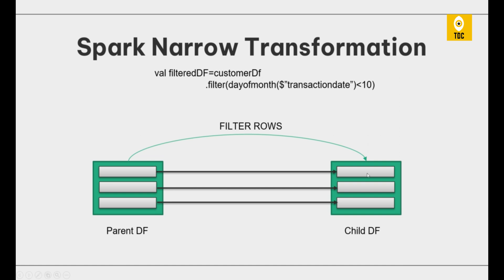You are not deriving a child partition using multiple partitions from the parent — it is a one-to-one mapping. For example, to apply a filter on transaction date, you don't need to shuffle; you apply it on the first partition, then the second partition, sequentially or in parallel depending on the cluster configuration. End of the day, one partition of the child data frame is always derived from only one partition of the parent.